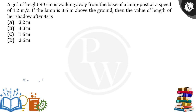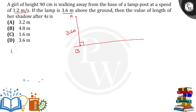So here there is a ground, and on the ground there is a lamp post standing vertically. The height of the lamp post is 3.6 meters — this is AB. A girl of height 90 centimeters is walking away at a speed of 1.2 meters per second. So in 1 second she travels 1.2 meters, and in 4 seconds she travels 1.2 × 4 = 4.8 meters.